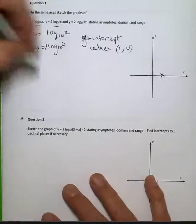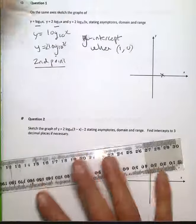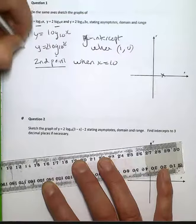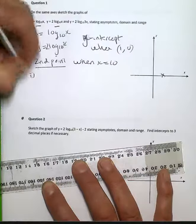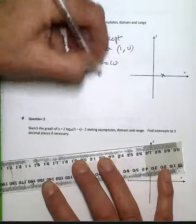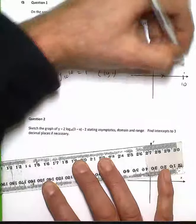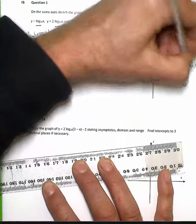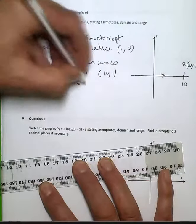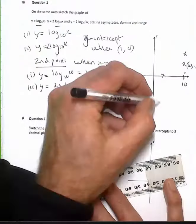So in this instance, our second point, I'll choose when x is equal to 10. So in the first instance, y is equal to log 10 to the base 10, which is 1, so I'll have a point of 10, 1. And the second instance, when I do that, twice by 1, which will give me 2, 10, 2. And that will give me a way of plotting those two graphs.